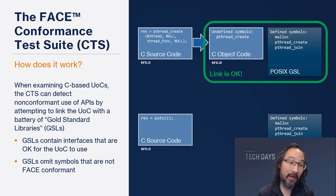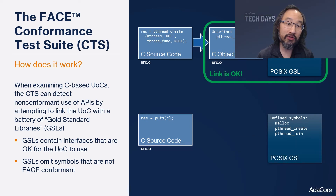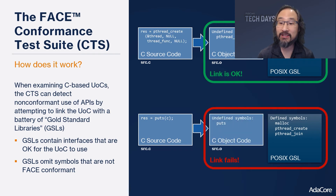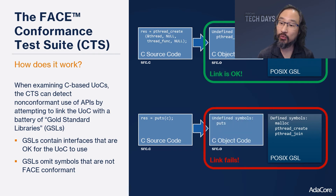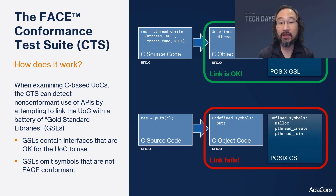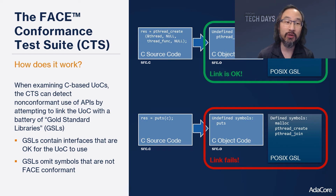These gold standard libraries contain all the things that are portable according to a certain FACE capability set, and they don't contain anything that is not within that given FACE capability set. Given that the code at the top successfully links with the GSL, it is verified as being FACE conformant. On the bottom, we have a call to puts. Puts is not FACE conformant, and if we try to link that with the GSL, the link fails. This link failure with the GSL means the code is not conformant with the FACE profile.